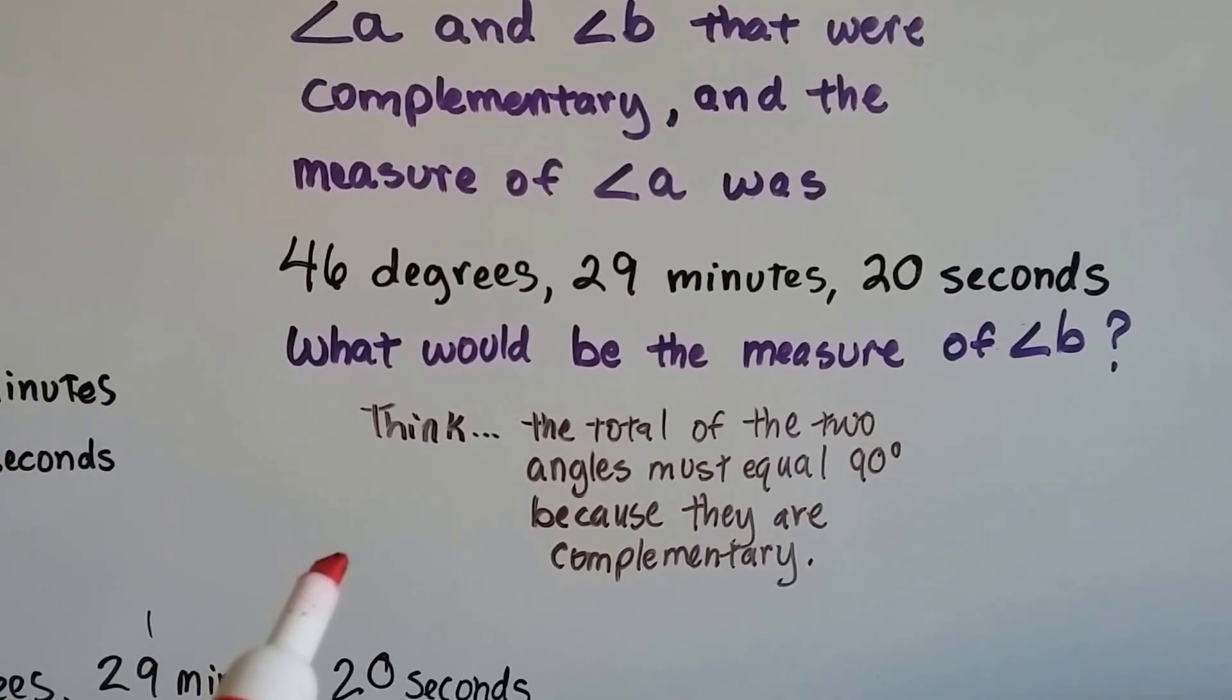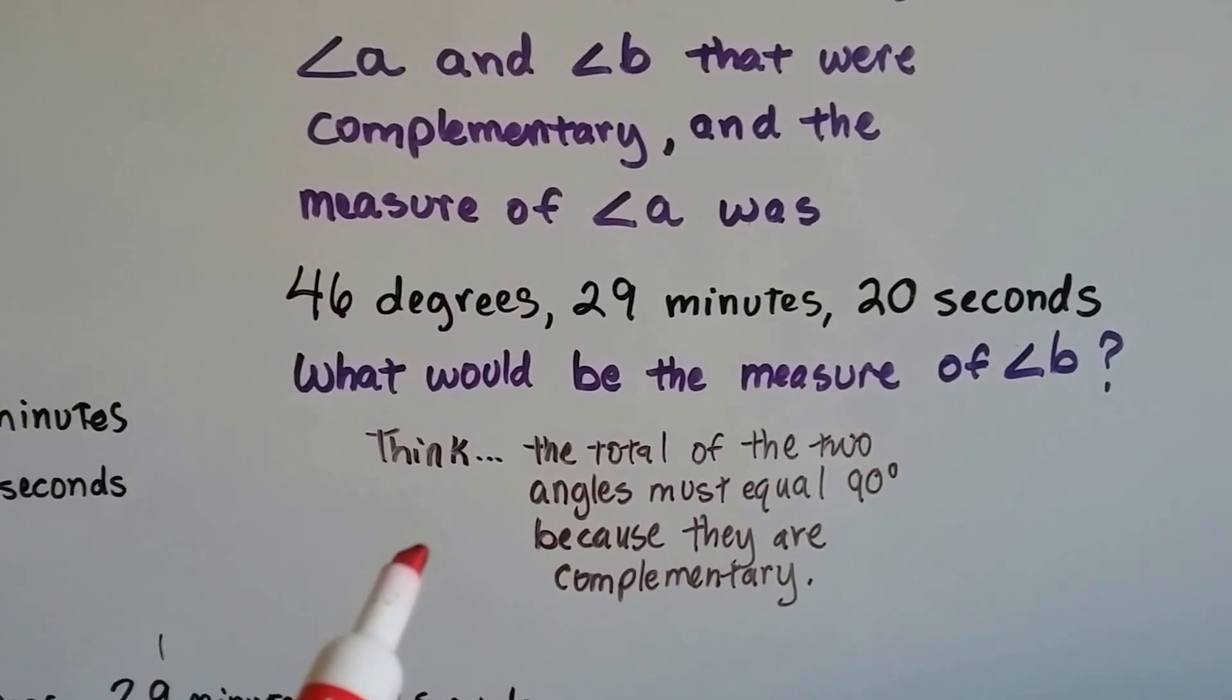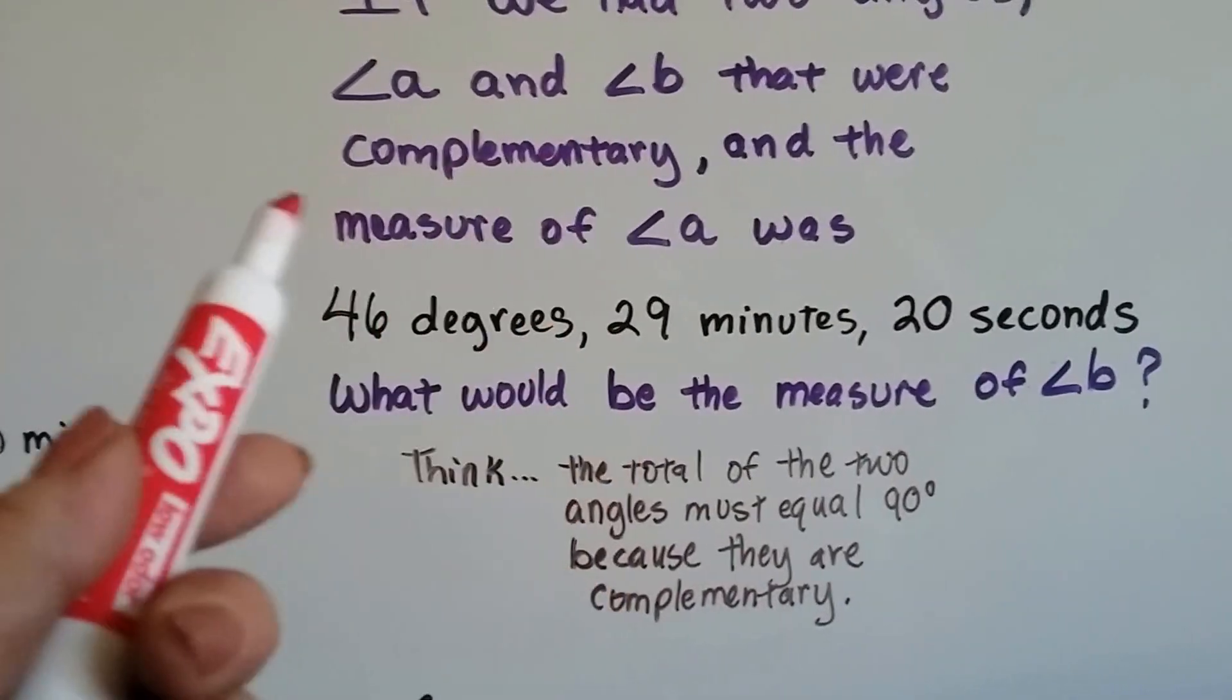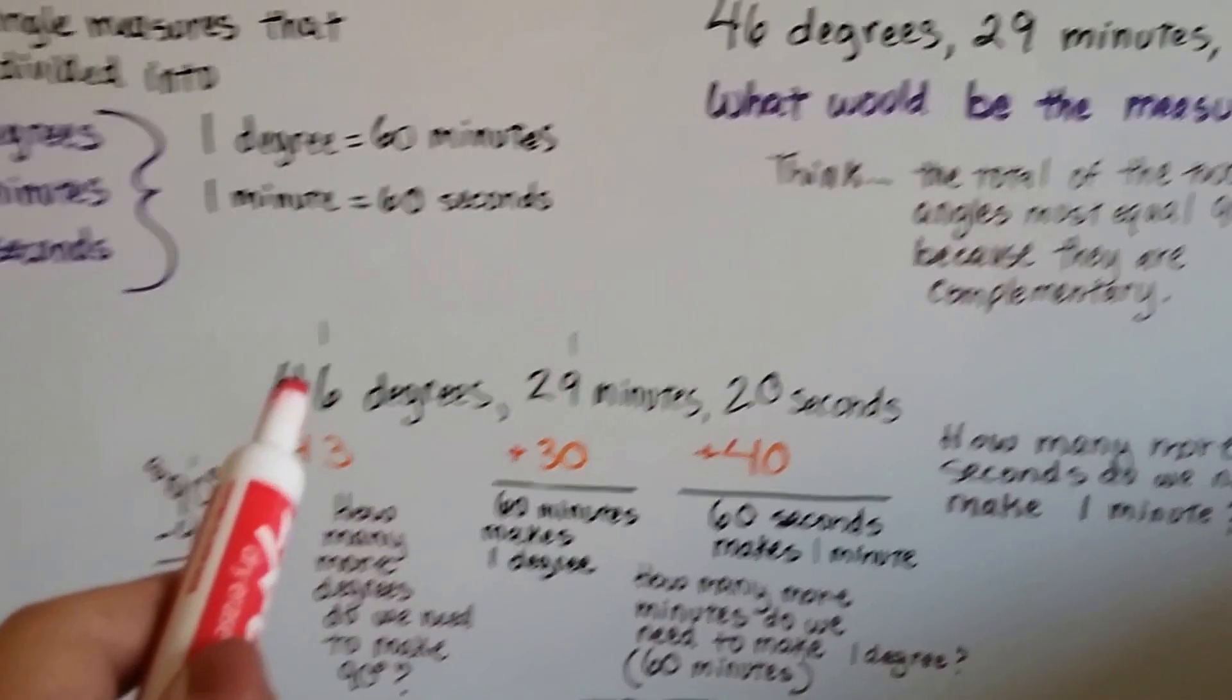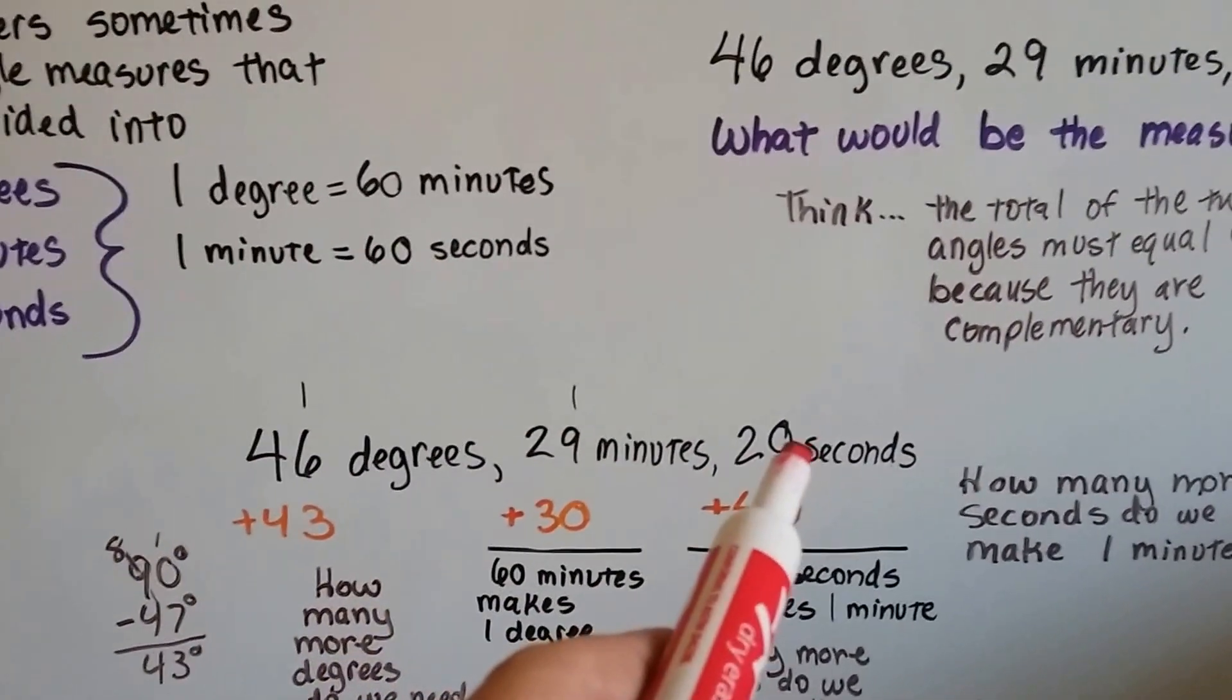So we think the total of the two angles must equal 90 degrees because they're complementary. So we need to get to 90 degrees. Well, we've got 46 degrees, 29 minutes, and 20 seconds.